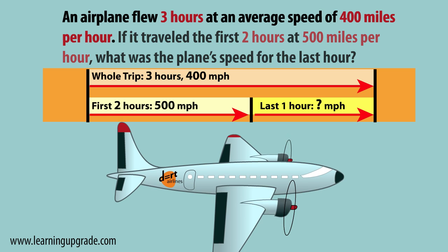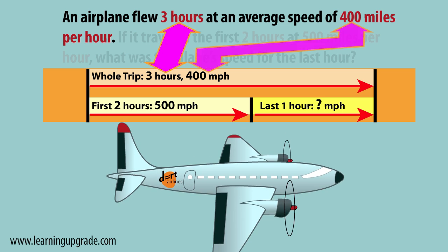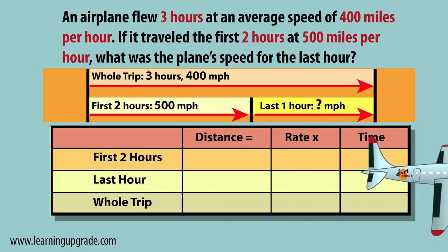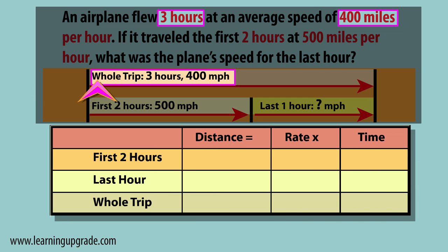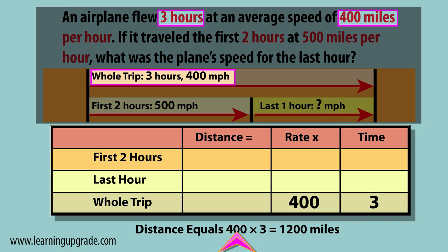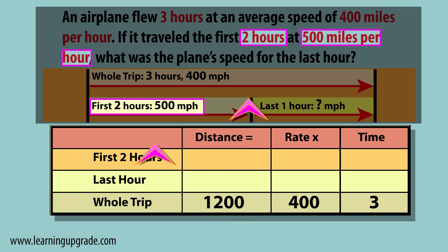With each leg of the journey marked, next make a table marked distance, rate, and time, with a row for each leg of the journey. Fill in the table with values that are given, then calculate the other values.